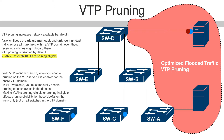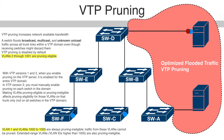VTP pruning takes effect several seconds after you enable it. VTP pruning does not prune traffic from VLANs that are pruning ineligible. VLAN 1 and VLANs 1002 to 1005 are always pruning ineligible, so traffic from these VLANs cannot be pruned. Extended range VLANs — VLAN IDs higher than 1005 — are also pruning ineligible.